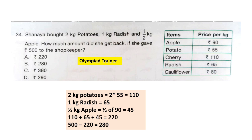Question 34: Shanaya bought 2 kg potatoes, 1 kg radish, and 1.5 kg apple. How much money did she get back if she gave Rs. 500 to the shopkeeper? Potatoes cost Rs. 55 per kg, so 2 kg = Rs. 110. Radish costs Rs. 65 per kg, so 1 kg = Rs. 65. Apple costs Rs. 90 per kg, so 1.5 kg = Rs. 45 (half of 90). Total = 110 + 65 + 45 = Rs. 220. She gets back 500 − 220 = Rs. 280. The correct answer is option B: Rs. 280.